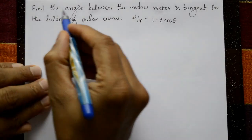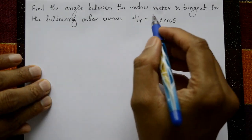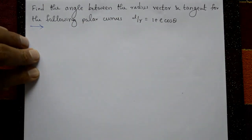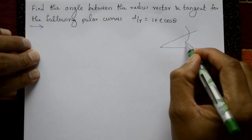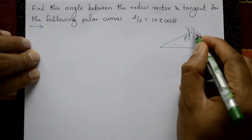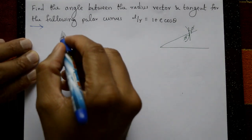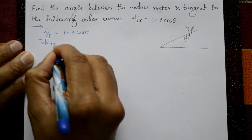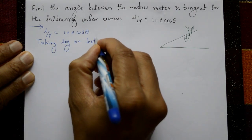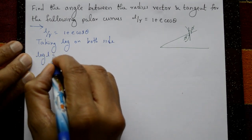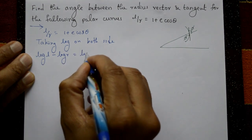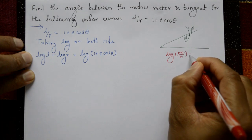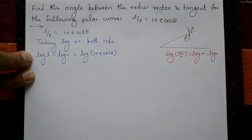Find the angle between the radius vector and the tangent for the polar curve l/r = 1 + e·cos θ. In the diagram, the radius vector, curve, and tangent are shown; we need angle ψ. Taking log on both sides: log l − log r = log(1 + e·cos θ), using the log property log(m/n) = log m − log n.